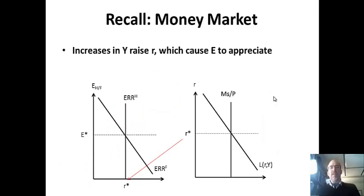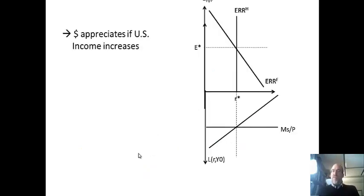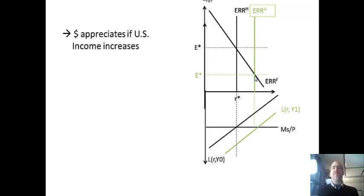To get the AA curve, let's talk about the money market. This is where income comes in. If you increase income, you wind up with higher interest rates. This is a shared axis; if I change the interest rate in the money market, I change ERR at home. An increase in GDP leads to a higher equilibrium interest rate — this also helps us get the LM curve in the IS-LM model. Higher income and a stronger currency go together: higher income leads to higher expected rate of return and a stronger currency, and so equilibrium is automatically restored.